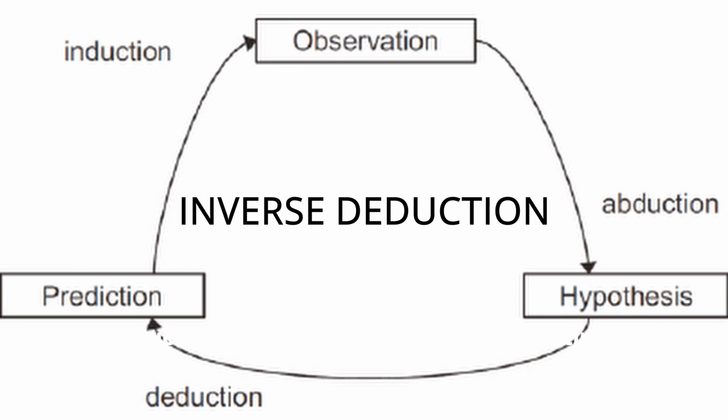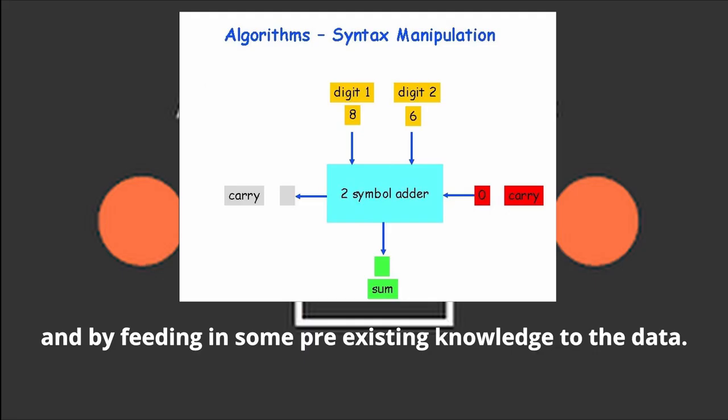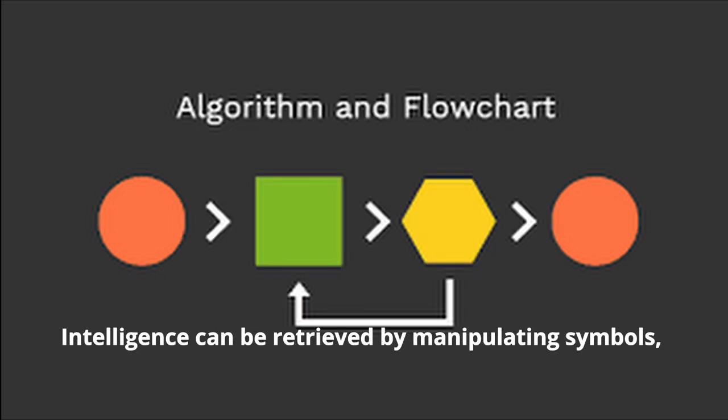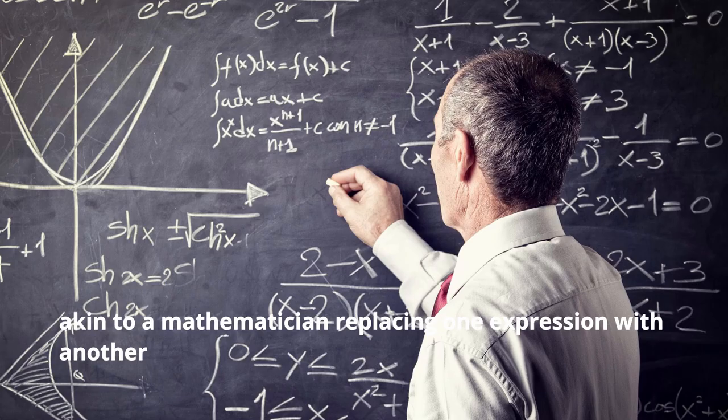Universal deduction in software works by manipulating symbols and by feeding some pre-existing knowledge to the data. Intelligence can be retrieved by manipulating symbols, akin to a mathematician replacing one expression with another.